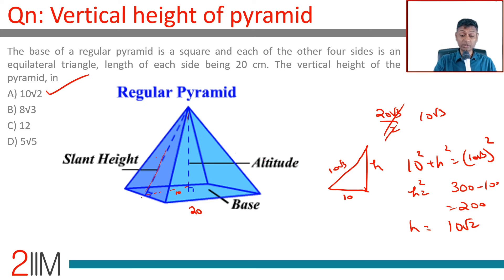The other way of doing this, you can say let's deal with this diagonal which is 10 root 2, and then find h. That will also be a right angle triangle.